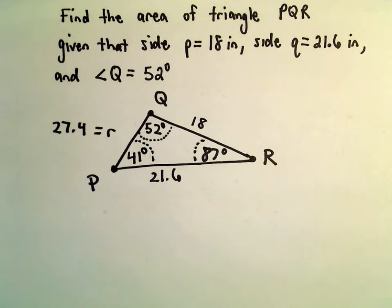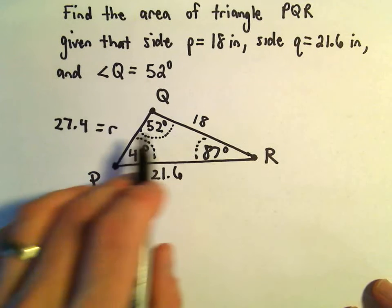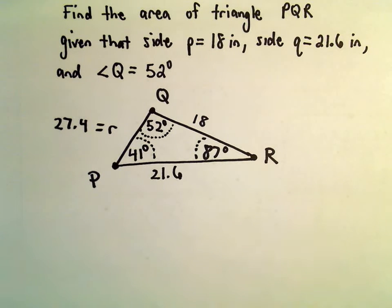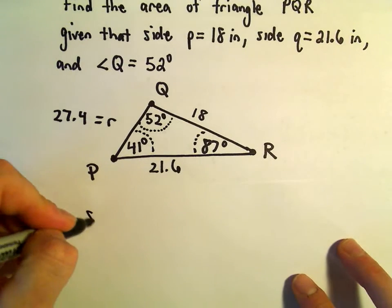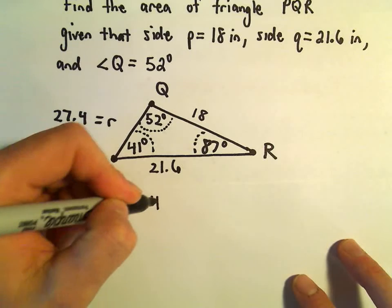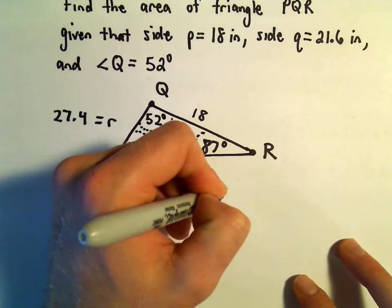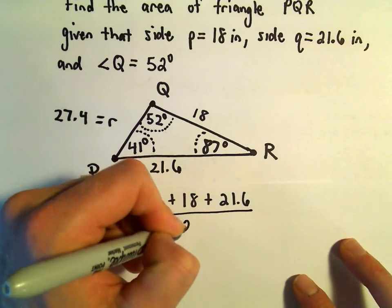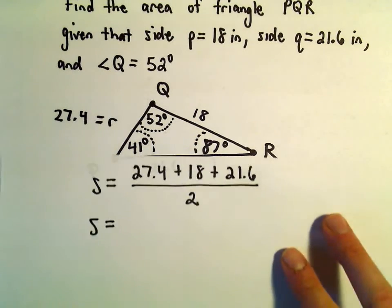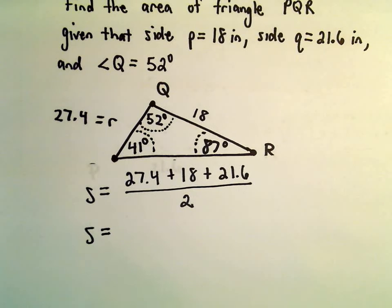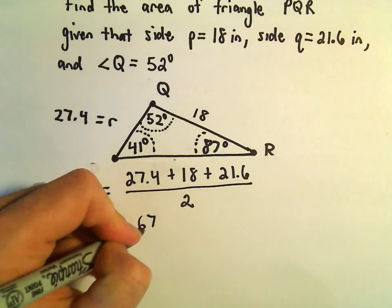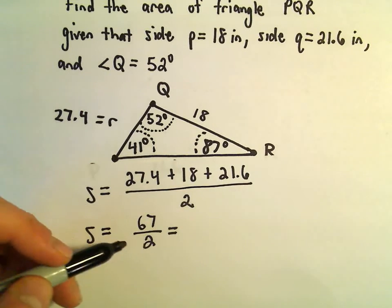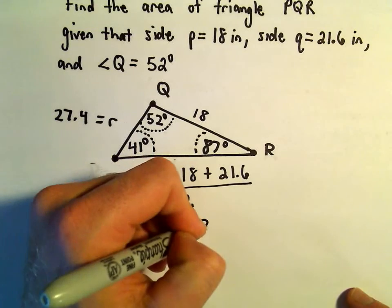And now we've got all the side lengths. So we can finally use Heron's formula to actually simply find the area. So to use Heron's formula, we first have to find the semi-perimeter. 27.4 plus 18 plus 21.6 all over 2. I think this is definitely stuff that, at the end of the day, I'd plug all into a calculator. So 27.4 plus 18 plus 21.6. Hey, that's exactly 67 on top. 67 divided by 2 is going to be 33.5.